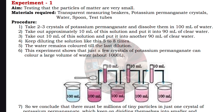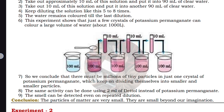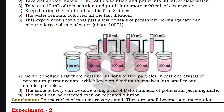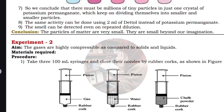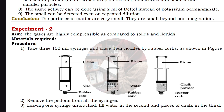For experiment number 1, you have to cover all the side headings: aim, materials required, procedure, conclusion, and everything else. The aim is testing that the particles of matter are very small. You have to write down the materials used, then the procedure step by step, draw the diagram very neatly, and at the end write down the conclusion. Likewise, write all 6 experiments.